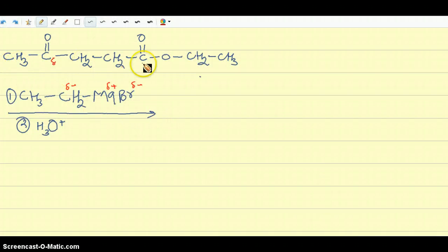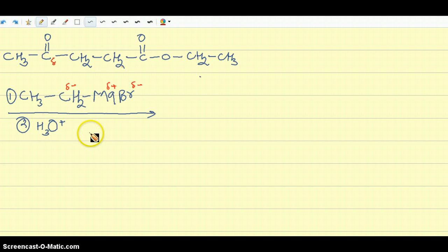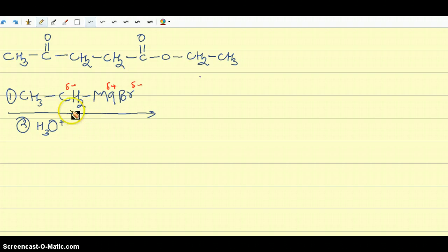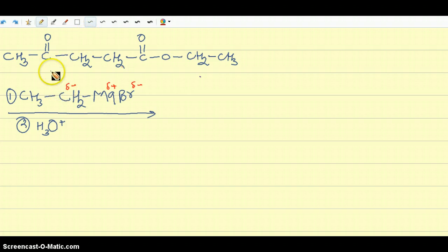The first thing you need to do is identify the nucleophile and the electrophile. The Grignard reagent has a negative charge on the carbon; magnesium has a positive charge and bromine has a partial negative charge. This bond is highly polarized, so there is a lot more negative charge on this carbon, making it highly nucleophilic.